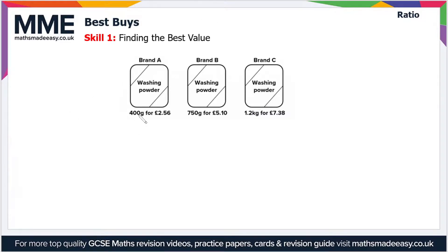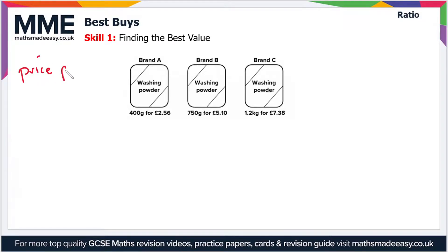The best way to illustrate this is with an example. Here we've got washing powder on sale with three different brands: A, B, and C. Brand A gives you 400 grams for £2.56, Brand B gives you 750 grams for £5.10, and Brand C gives you 1.2 kilograms for £7.38. We're going to work out the price per gram, measured in pounds per gram.